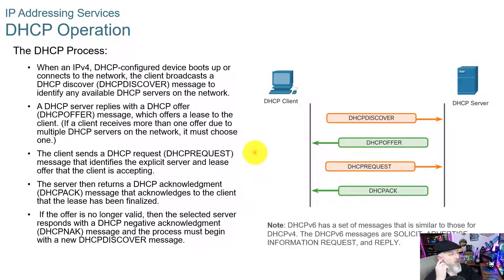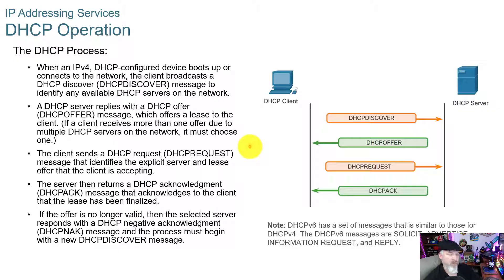After a certain amount of time on its lease, the DHCP client will send a request to ask if it can still keep its IP address. If the server is available, it will respond and renew the lease.